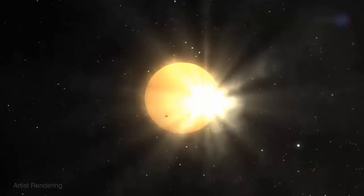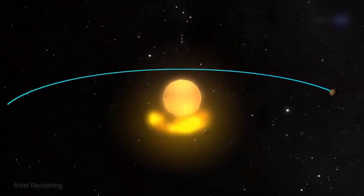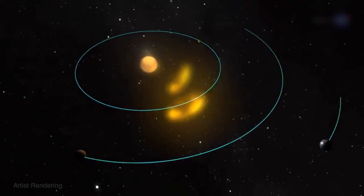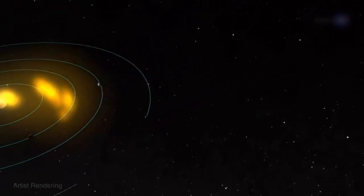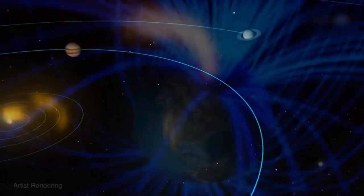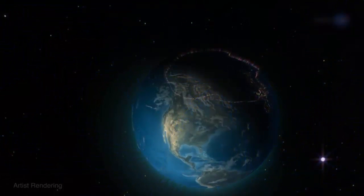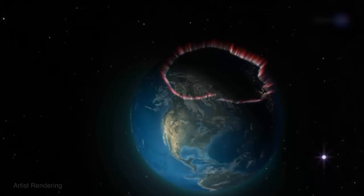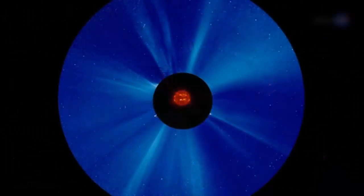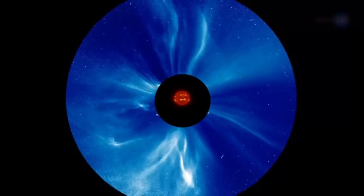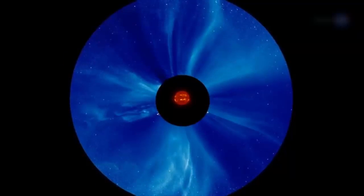Coronal mass ejections, or CMEs, are billion-ton clouds of plasma that billow away from the Sun in the aftermath of magnetic explosions, often, but not always, in tandem with a solar flare. CMEs hitting Earth can spark geomagnetic storms and northern lights. CMEs often announce themselves with a burst of radio waves. The emissions are caused by shockwaves in the leading edge of the cloud, which plow through the Sun's atmosphere at supersonic velocity.